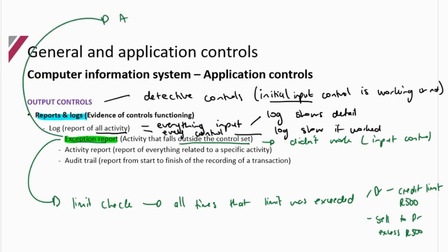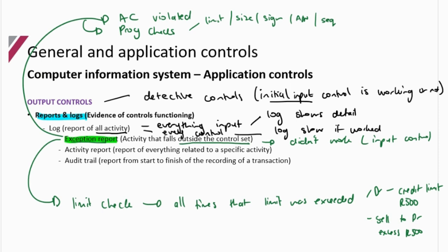Exception reports are only generated where there's an exception — where the control is not working. You can get exception reports for almost all your input controls: for when access controls were violated and someone with an incorrect username or password gained access to an area they shouldn't; for all your program checks where limits, size, sign, alphanumeric, or sequence checks failed and it allowed transactions to continue out of sequence — for example, source document numbers with missing documents.